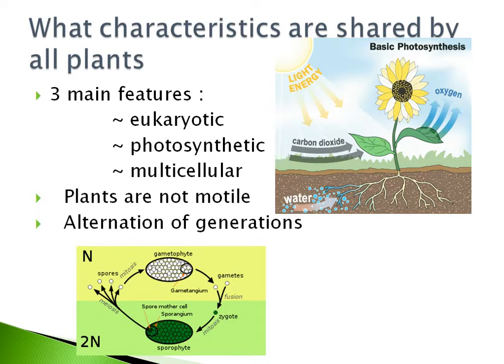Some other characteristics that all plants have are that plants are not motile. All terrestrial plants have the same life cycle called the alternation of generations, which is where the plant alternates between a sporophyte that has two sets of chromosomes and a gametophyte that has one set of chromosomes.